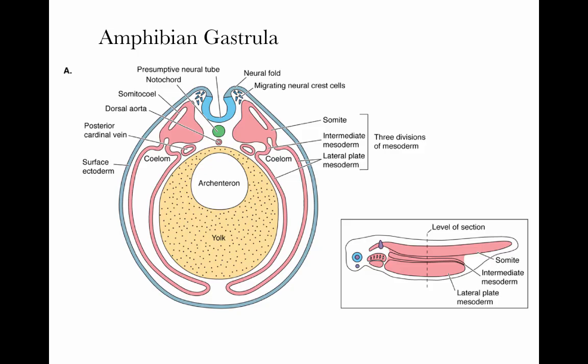Looking at the developing amphibian gastrula in cross-section, we can see the somite, intermediate mesoderm, and lateral plate mesoderm growing down and surrounding the yolk mass. The developing neural tube, notochord, and archenteron or primitive gut are surrounded by yolk. The somites lie alongside the notochord, intermediate mesoderm lies in between, and lateral plate mesoderm grows down and around the yolk sac.